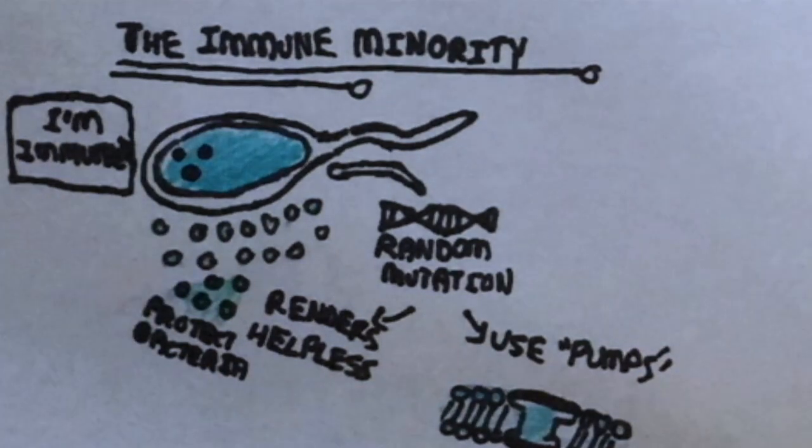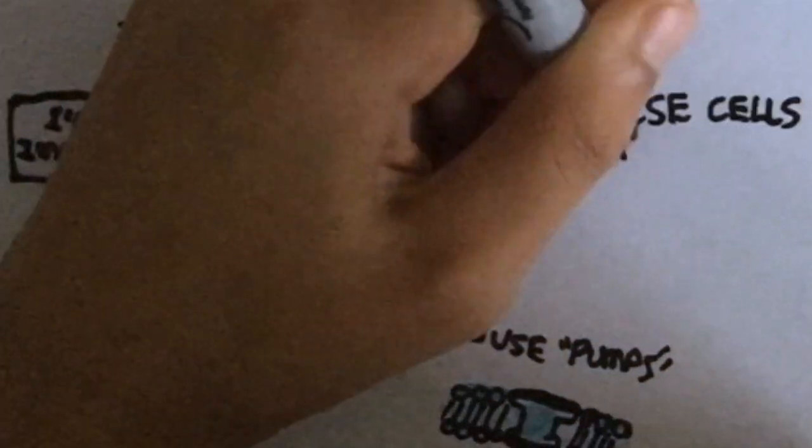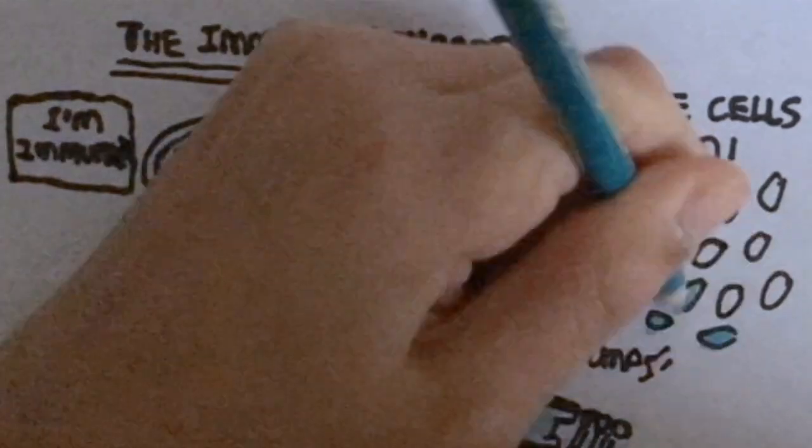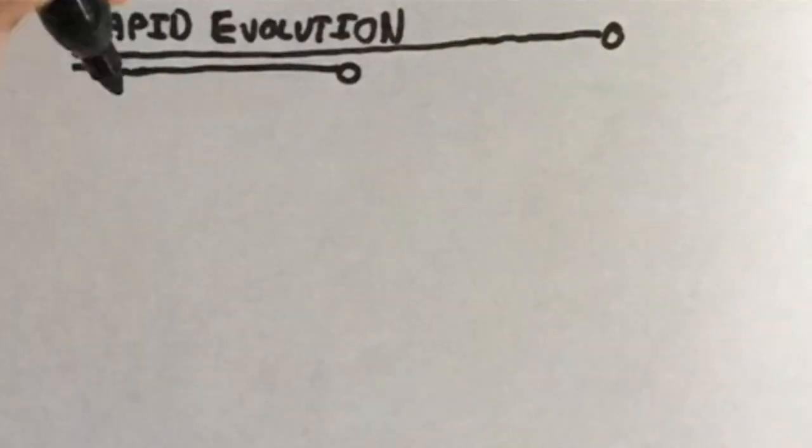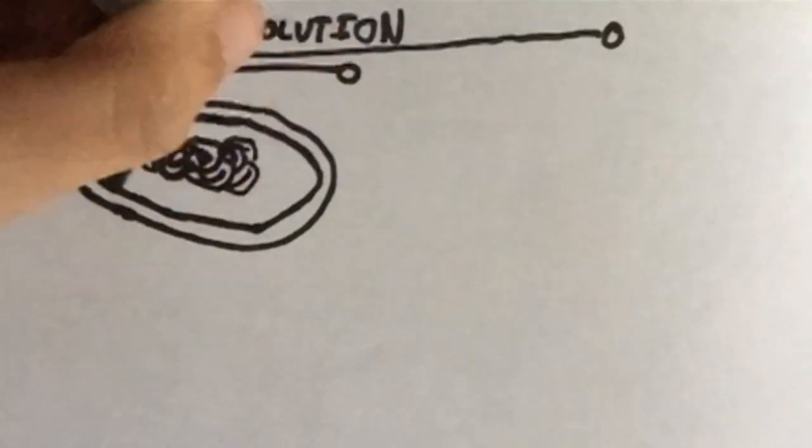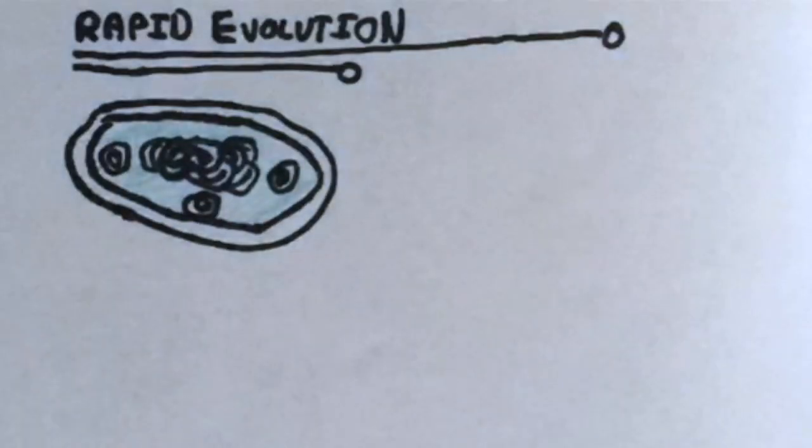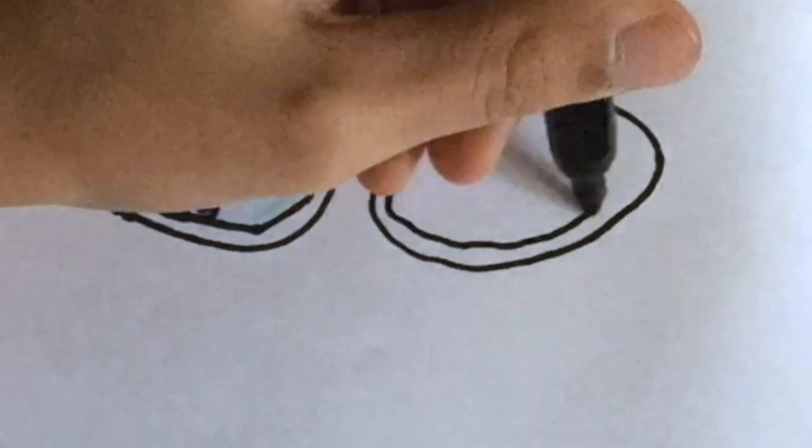Because a bacterial generation can emerge in approximately 20 minutes, evolution in these populations happens very, very, very fast. Secondly, bacteria can exchange snippets of DNA called plasmids, gaining blueprints of how to build structures that'll help them survive. They can then build proteins that assemble into these structures.